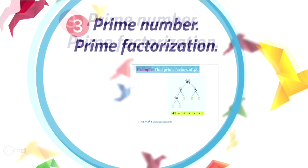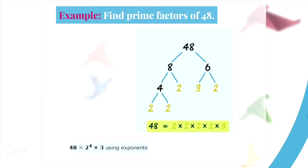The process of finding which numbers multiplied together make an original number is called prime factorization. For instance, find the prime factors of 48. You can write 48 as a product of 8 and 6. Write 8 and 6 below 48. Continue and factor 8 into 4 times 2, then 4 into 2 times 2, and lastly 6 into 3 times 2. We cannot factor any further, so we have found the prime factors. We write 48 as a product of prime factors, and we can also write this using exponents as 48 equals 2 to the power of 4 times 3.